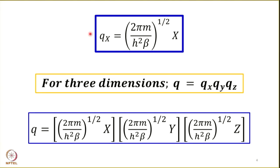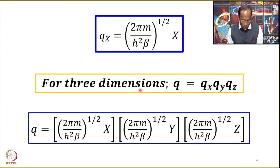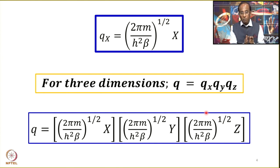We have previously derived that qx = √(2πm / h²β) · x, which is the partition function for a particle free to move only in the x dimension. For three dimensions, we need to multiply qx · qy · qz. So qx is the first bracketed expression; the second is qy, obtained simply by replacing x with y; and the third is qz. We now apply the result that the partition function is the product of partition functions for each mode of motion.